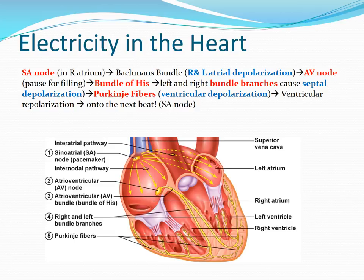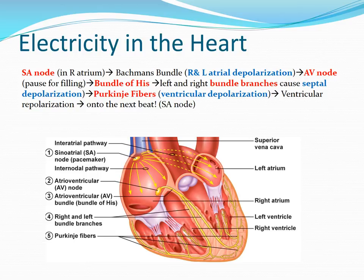Let's review the normal electrical conduction in the heart. I highly recommend that you review this until it is crystal clear, because if you have a clear understanding of the normal cardiac cycle, it is going to be much easier to understand when something goes wrong when we talk about dysrhythmias. The electricity in the heart — the cardiac cycle — begins in the SA node, also known as the pacemaker. The SA node decides what your heart rate is going to be, and normally it's between 60 and 100 beats per minute.